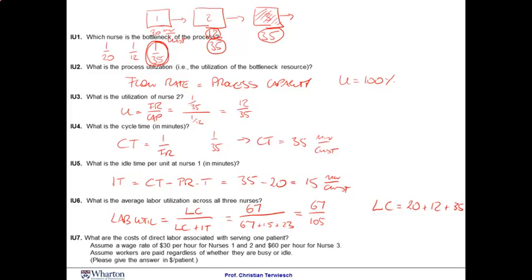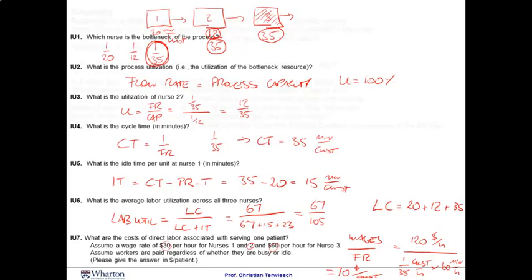And then finally, to find the cost of direct labor, we look at the wages divided by the flow rate. The wages here are $30 for nurse one per hour, 30 for nurse two, and 60 for nurse three. So we're paying $120 per hour. And we have to divide this by the flow rate. The flow rate we said was one athlete every 35. And this is careful with the units, this is customers per hour. Multiply this with 60 minutes in an hour. And that gives me then a total of $70 per customer.